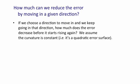When we're training the weights of a neural network, we're trying to get as far down the error surface as possible. So one question is, if we choose a given direction to go in, how much reduction in the error can we achieve by going just the right distance in that direction? How much does the error decrease before it starts rising again? And here we'll assume that the curvature's constant, i.e. we'll assume it really is a quadratic error surface.